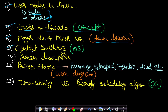The ninth topic is context switching, which is the same concept as you will find in your operating system classes, so you don't need to read it explicitly if you already know it. Process descriptors are also very important and are used in Linux.